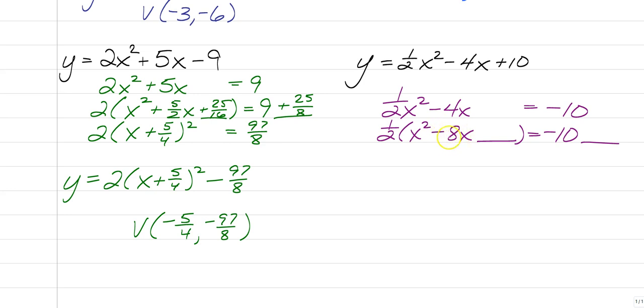So then we're just going to take half of the negative 8 and square it. We're going to get 16. Before we balance our equation, 16 times one half, we would be adding 8 to the other side. And the rest of the steps are the same.